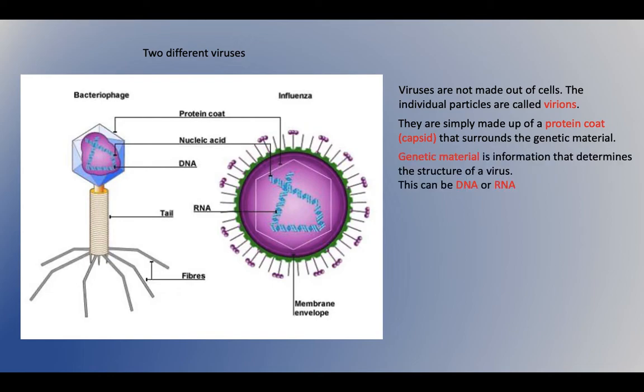Then, the genetic material is information that determines the structure of a virus. We have genetic material, our DNA, and that produces our characteristics, for example, our eye color, our hair color. And in viruses, this is called DNA or RNA.